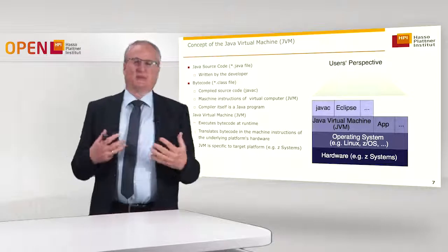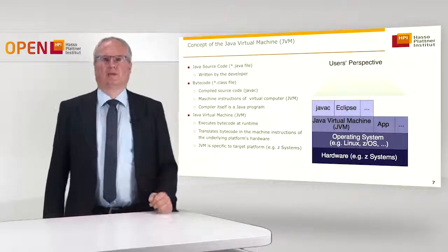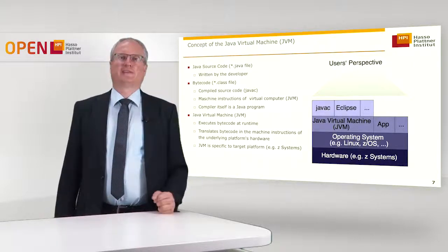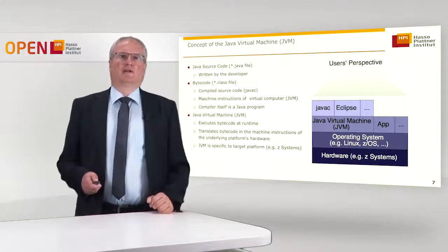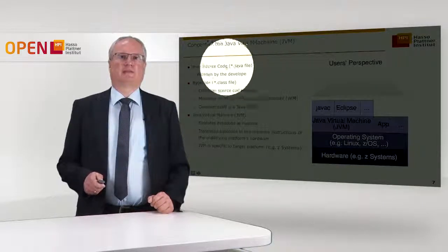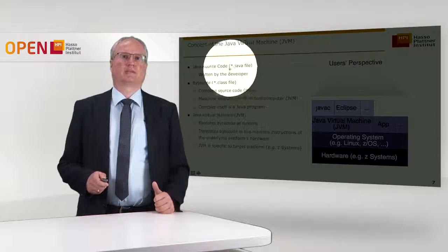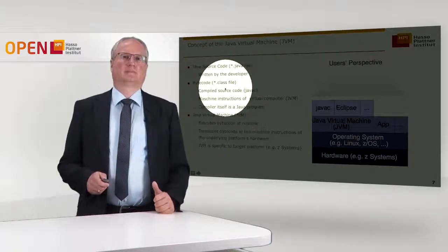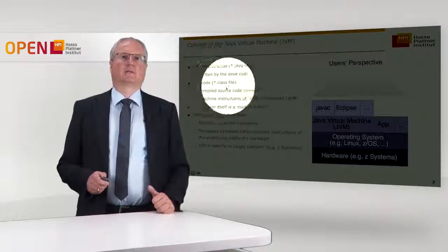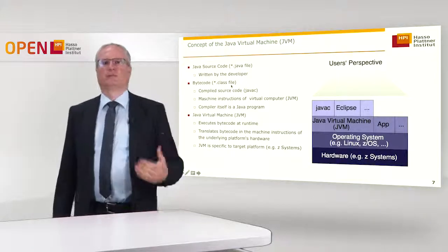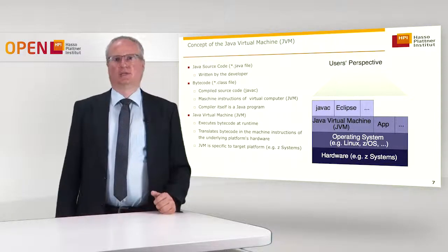Now let's look at the concept of the Java Virtual Machine, which is very crucial for the mainframe as well. The Java Virtual Machine is basically a runtime environment to execute the so-called bytecode. The developer starts by writing .java files, each containing one class, and usually has many such files forming the application. A compiler then compiles this source code into a binary format called the .class file — a compiled version of the class, but not compiled to the machine language of the target system. Instead, it's compiled into a machine-independent intermediate code called Java bytecode.